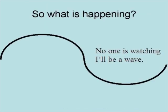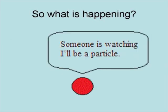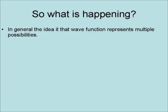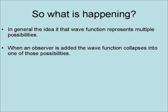What is really happening is that when a subatomic particle is not being observed, it behaves like a wave and can actually go through both slits at the same time. The properties of this wave are determined by the particle's wave function. On the other hand, when a subatomic particle is being observed, the wave function collapses and it behaves like a particle, and can only go through one slit at a time. In general, the idea is that the wave function represents multiple possibilities, and when an observer is added, the wave function collapses into one of those possibilities.